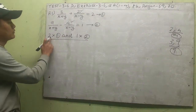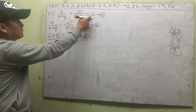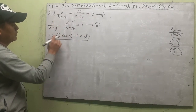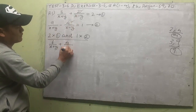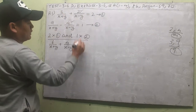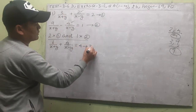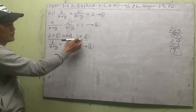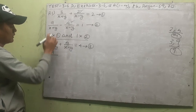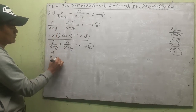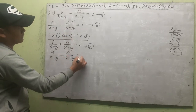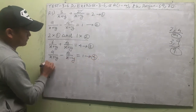Multiplying 2 to equation 1 gives: 6/(x+y) + 4/(x−y) = 4 — call this equation 3. Multiplying 1 to equation 2 leaves it unchanged: 9/(x+y) − 4/(x−y) = 1 — call this equation 4.